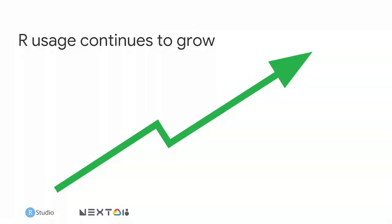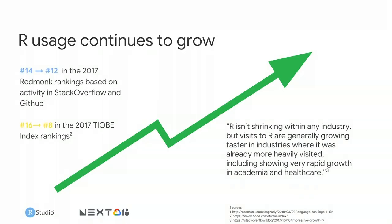Why are we here today? I started using R in 2005 as an operations research student. At that time, outside of academia, R was found in small pockets within the industry. I then spent seven years in data science and analytics consulting with a big four firm, and slowly saw R being evaluated and adopted across data science teams. Now in 2018, as a customer engineer at Google, we're seeing R in every single conversation about machine learning.